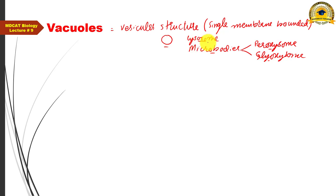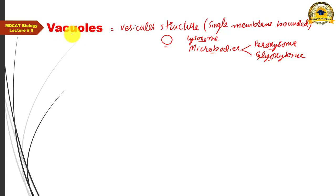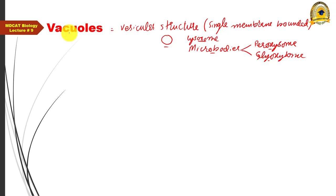If an MCQ asks 'which of the following vesicular structures must not necessarily contain enzymes,' the answer is vacuoles, because lysosomes, peroxisomes, and glyoxysomes must contain enzymes, whereas enzyme presence is not compulsory for vacuoles. Sometimes vacuoles may contain enzymes, but it is not considered a defining feature.